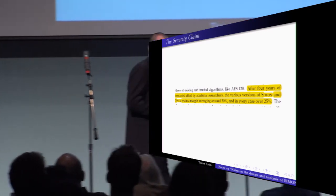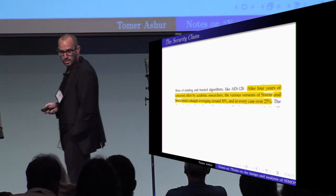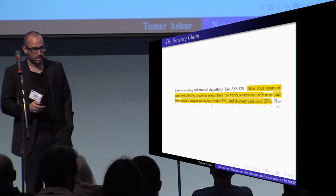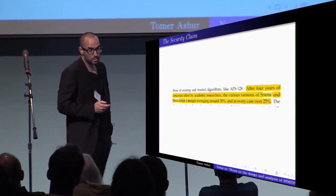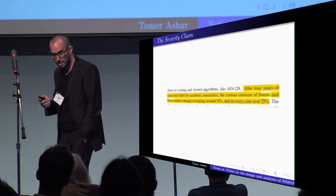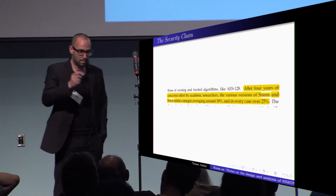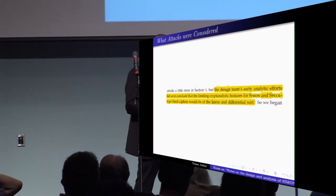So first, let's talk about what the security claim for Simon is, and remember this is all from their document. They're saying that after four years of concerted effort by academic researchers, the various versions of Simon and Spec retain a margin averaging around 30%, and in every case, over 25%. Please remember these numbers: 30% and 25%.